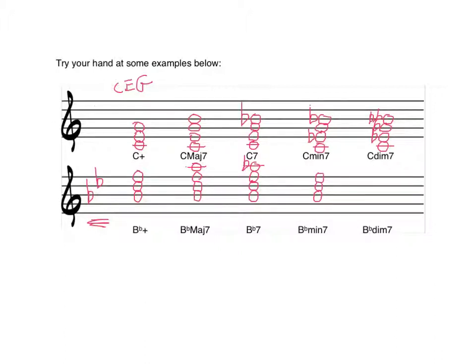B flat diminished - start with the major triad, lower the middle and the top of the triad, and then lower the seventh twice. So there you go, that's a quick seven or eight minute rundown on seventh chords.